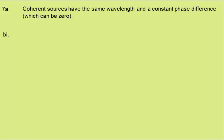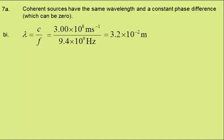In B part 1, we're given the frequency of the microwaves at 9.4 GHz. We have to find the wavelength. Well, wavelength is wave speed over frequency, and this comes out at 3.2 times 10 to the minus 2 metres.